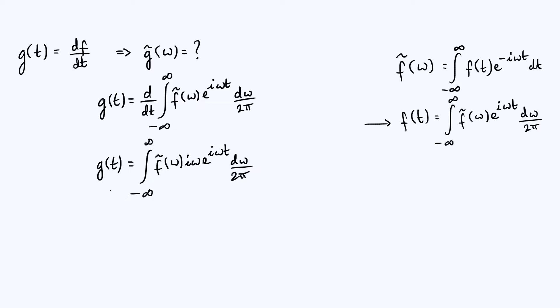Now by inspection, you can see this entire integral, it's a Fourier integral and it's supposed to give us g of t, which means that all of the stuff in front of the complex exponential should be the Fourier transform of g. So we can just write down that g tilde of omega is equal to i omega times f tilde of omega.